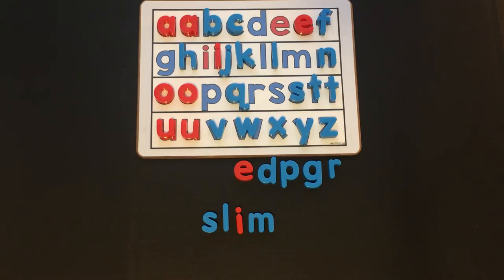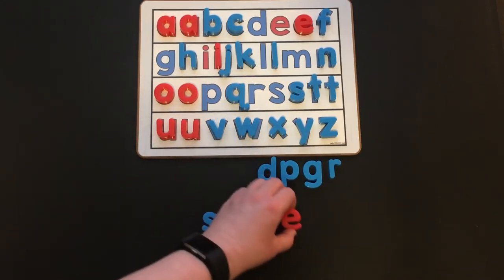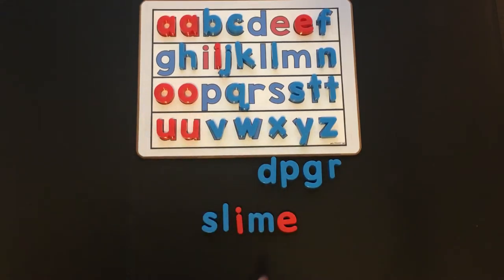Now, we know when we add a silent E to the end of a word with a vowel, that it makes the vowel say its long sound. If I add E to the end of slim, now it's going to put its magic on the I, so the I says its name.